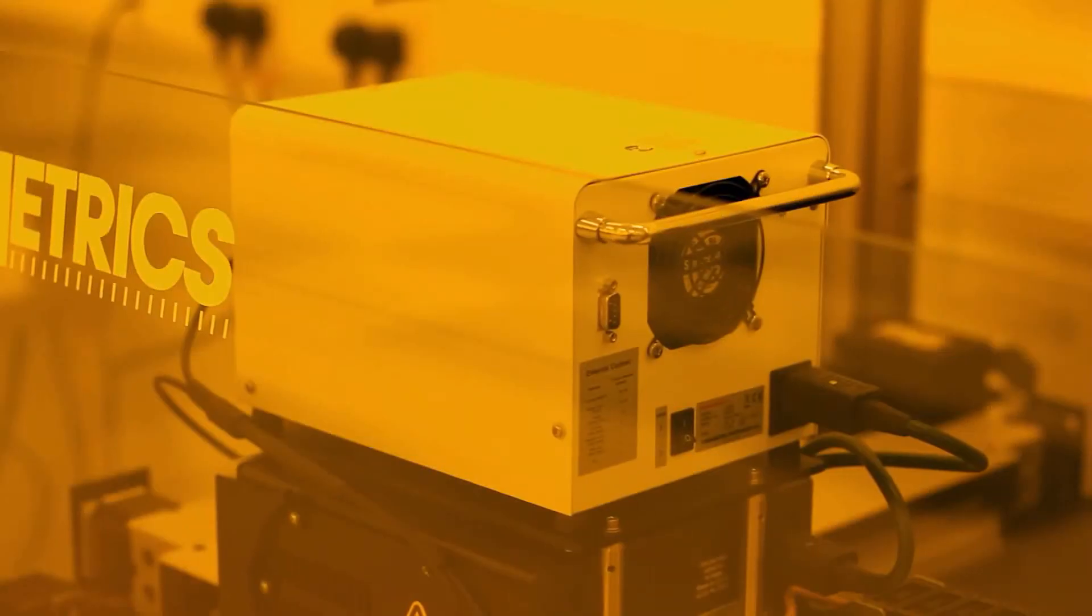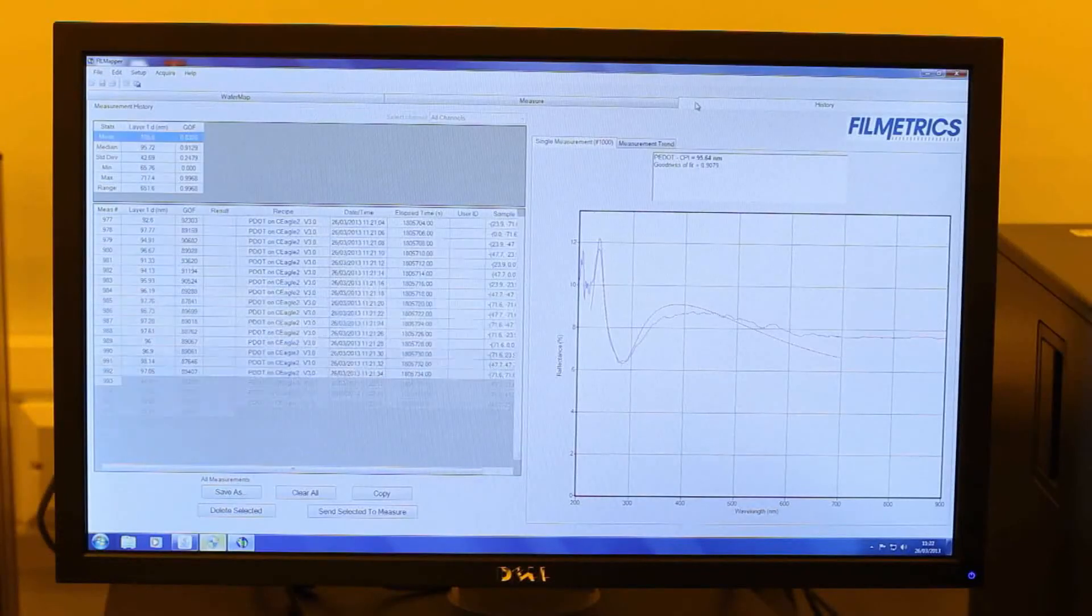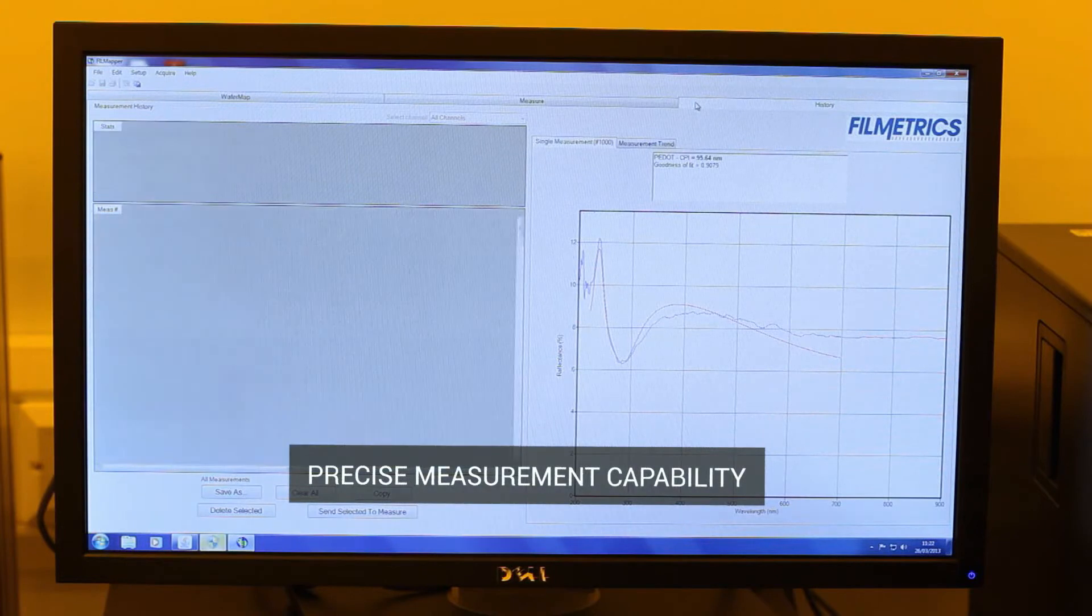Automated thin film metrology is utilized to measure precise film thickness and uniformity, enabling the user to quickly characterize and optimize the coating process.